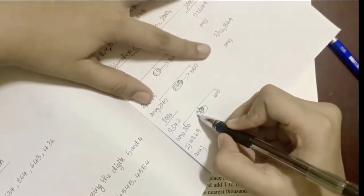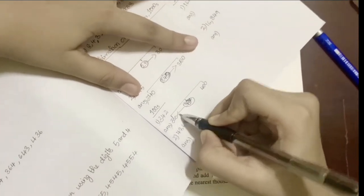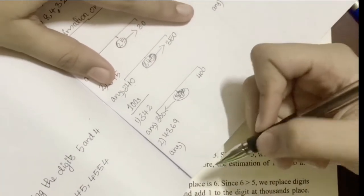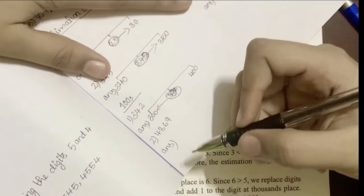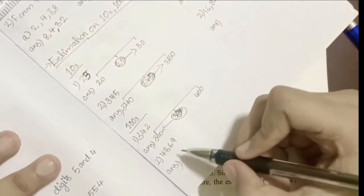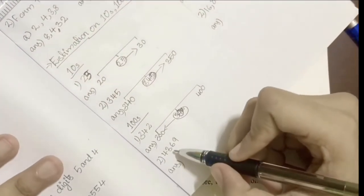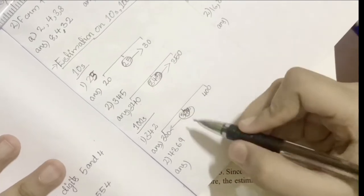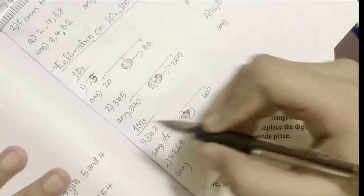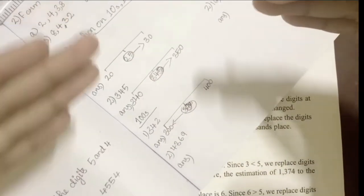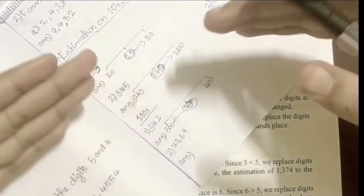Since the tens digit of 342 is 4, which is below 5, it goes to the lower side. So 342 is estimated to 300.